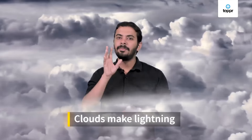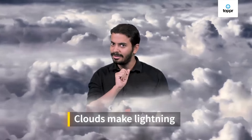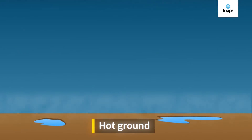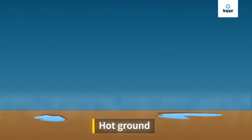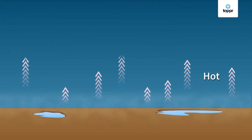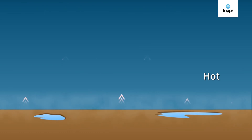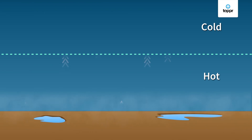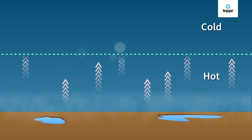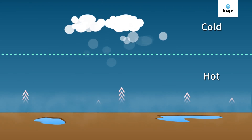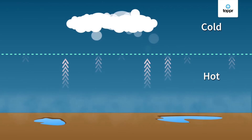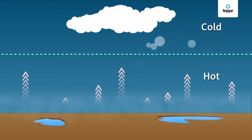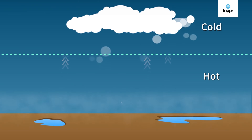To learn about lightning, we need to know a little more about clouds, because clouds make lightning. During summers, the ground is hot and it heats the air above it. This warm air rises. As the air rises, the cold temperatures at the highest cools the water vapor down, which forms a cloud. As more and more air continues to rise, the cloud gets bigger and bigger.